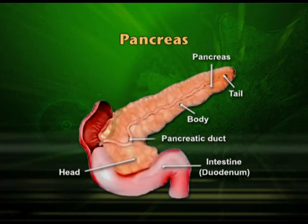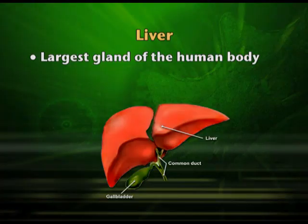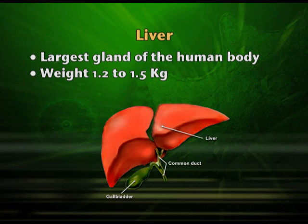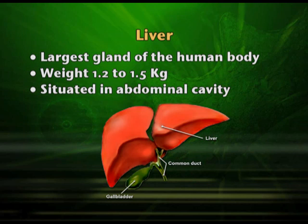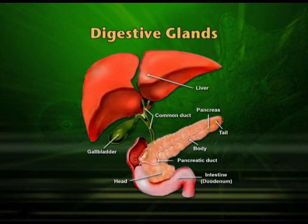Through this duct, pancreatic juice is delivered into the duodenum and starts working on food after the duodenum, not before. The liver is the largest digestive gland in our body — and also the largest gland overall. It weighs around one to one and a half kilos and is placed just below the diaphragm. Its duct, called the hepatic duct, also ends onto the duodenum and carries its secretion in the form of bile.